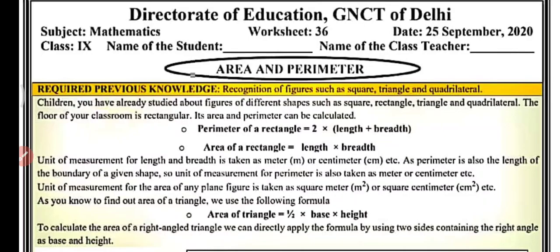Hi everyone, welcome to my YouTube channel NCRT Mathsub. Today in this video we will do worksheet number 36, class 9, subject mathematics. So let's begin. Today our topic is area and perimeter. So what is area or perimeter of a shape? Today we are going to learn about this.